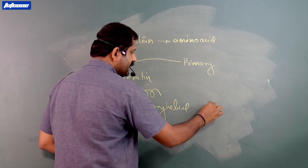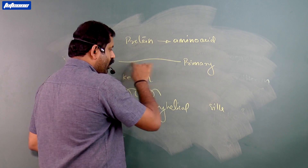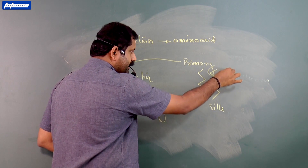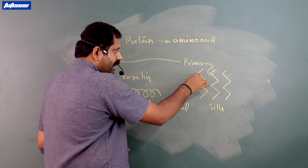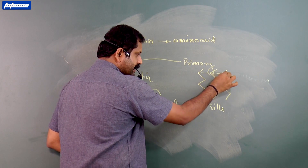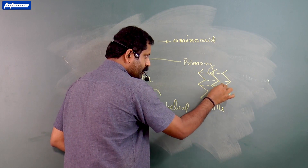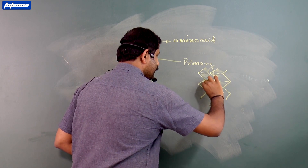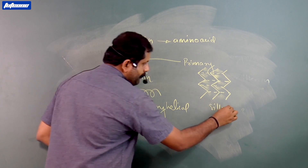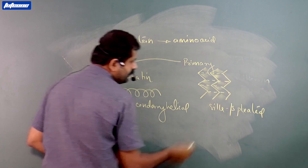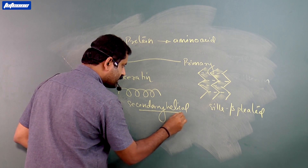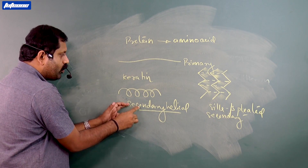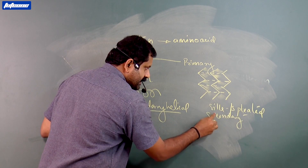Another secondary structure is found in silk. Here, primary structures are arranged in a zigzag manner, one parallel to each other. Adjacent fibers are connected together by hydrogen bonds, and they resemble a three-dimensional figure. This is called beta-pleated. So in silk, it is called secondary beta-pleated, while in keratin it is called secondary helical.